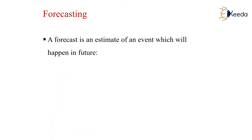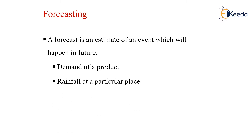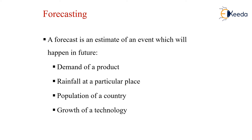So, what is forecasting? It is an estimate of an event which will happen in the future — maybe the demand of a product, the rainfall at a particular place, the population of a country, or the growth of a technology. These are all examples of forecasting. Like when a new mobile is launched, what will be the demand and how much will be the sales — that will be determined by forecasting methods.